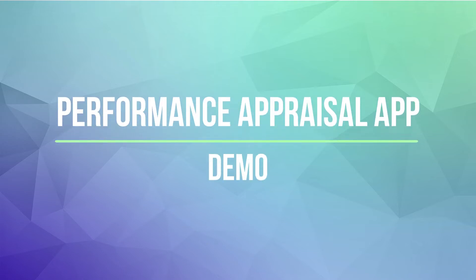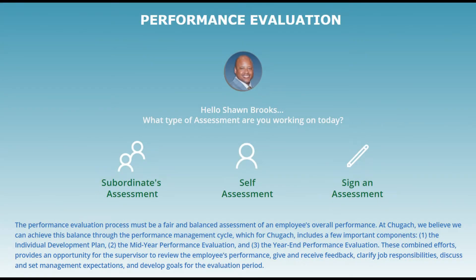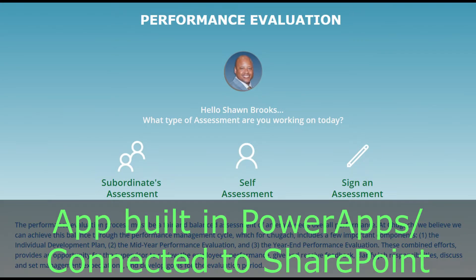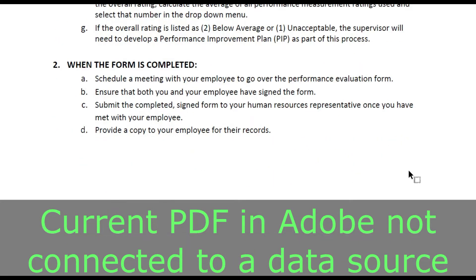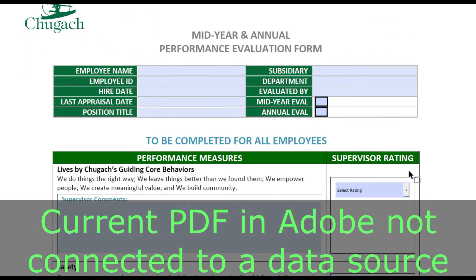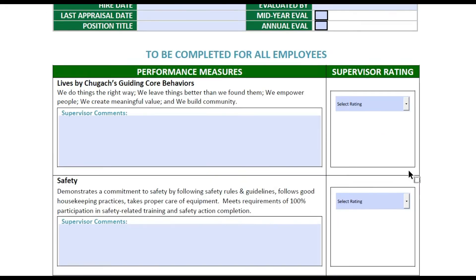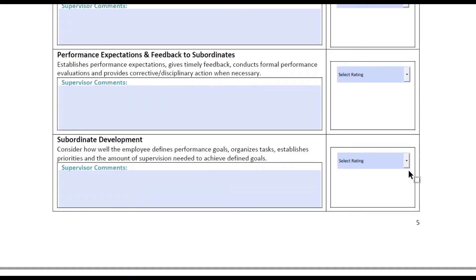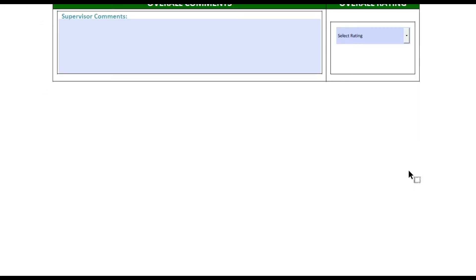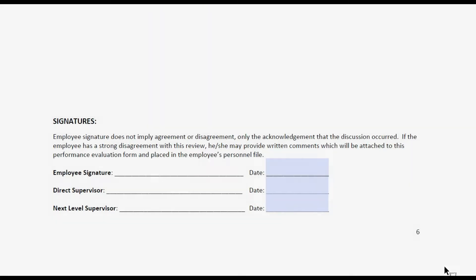This is a brief demo of the Performance Appraisal app. The app is built in PowerApps and connected to SharePoint. It is based on the current version of the CGS appraisal currently built in Adobe and not connected to a data source. There are a total of 15 comment fields and 15 rating fields, in addition to three non-digital signature blocks with three date fields.